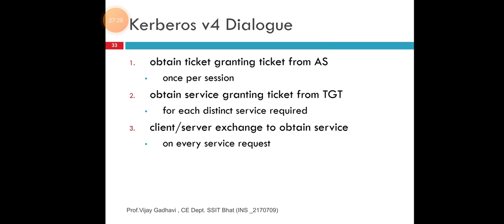When the client needs to communicate with a service on another node, the client sends the TGT to the TGS, which usually shares the same host as a KDC. The service must have already been registered with the TGS with a Service Principal Name — SPN. The client uses the SPN to request access to the service. After verifying that the TGT is valid and that the user is permitted to access the requested service, the TGS issues a ticket and session key to the client. The client then sends the ticket to the service along with its service request. This is the basic scenario of Kerberos dialogues.